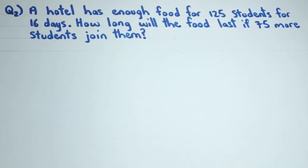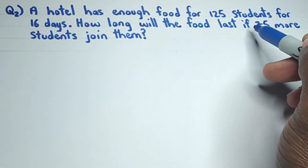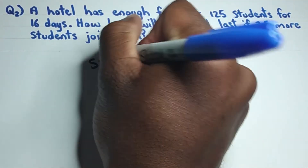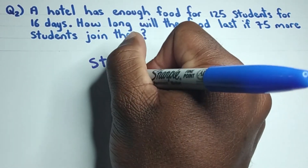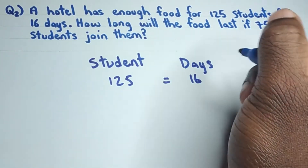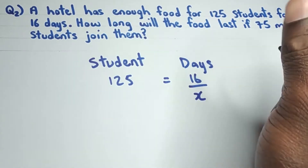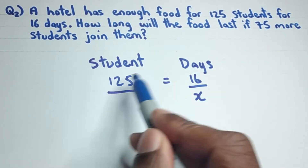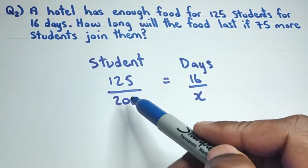Now let's look at Question 2. A hotel has enough food for 125 students for 16 days. How long will the food last if 75 more students join them? The two variables are students and days. We know the food lasts 125 students for 16 days. If 75 more students join, we have 125 + 75 = 200 students. We want to find how many days the food will last for 200 students.